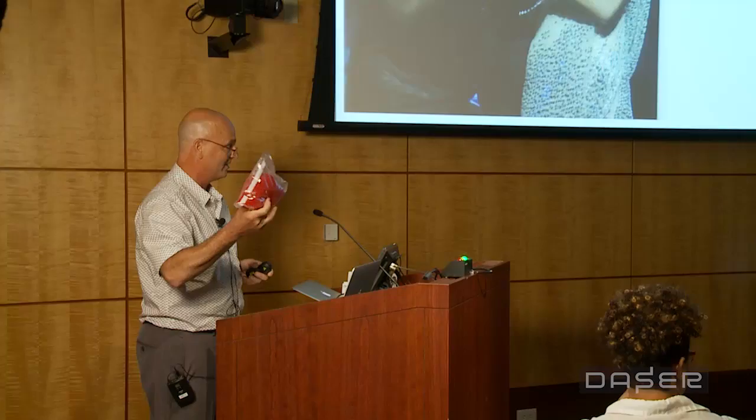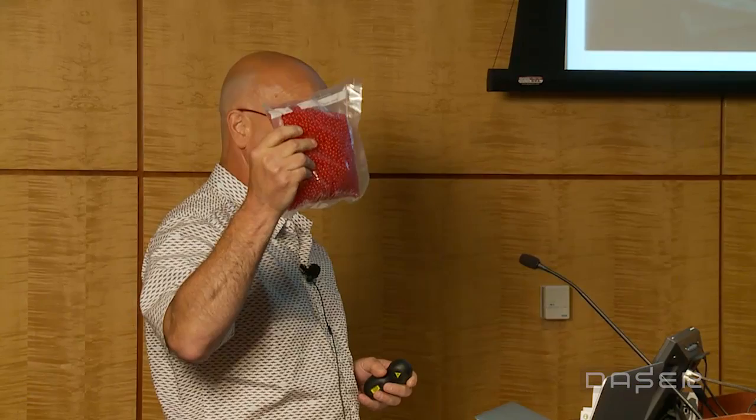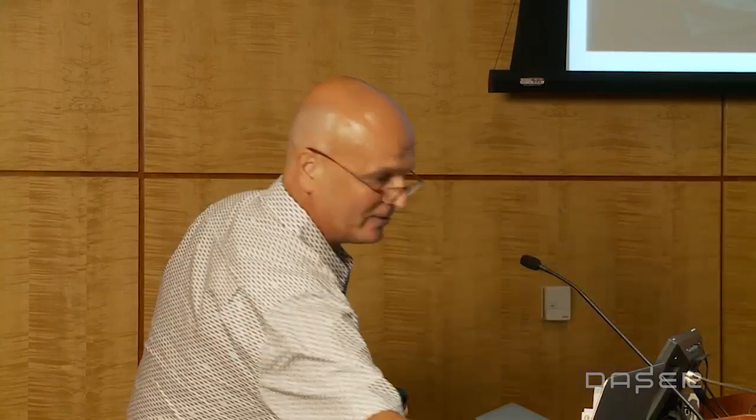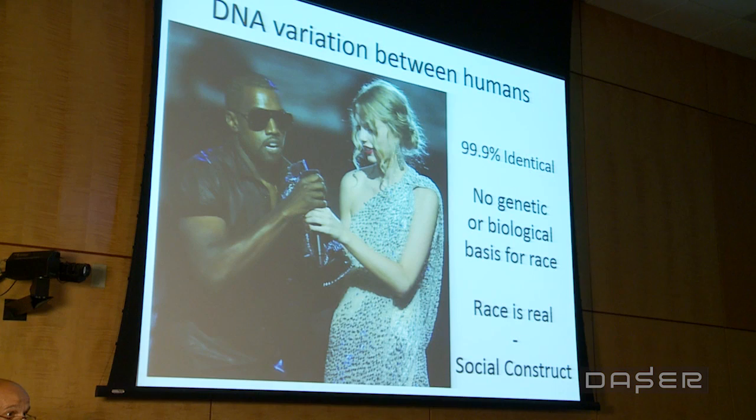In this bag there are 5,000 beads. The red ones represent what's identical between any two people in the world — it's only those few blue ones that represent our differences. From this type of analysis, it's clear that there's no genetic or biological basis for race.